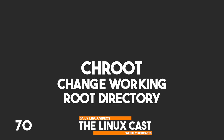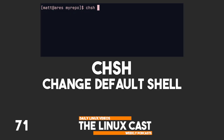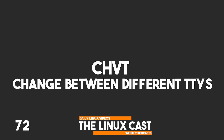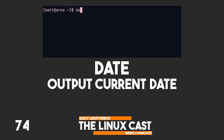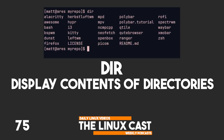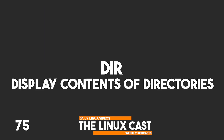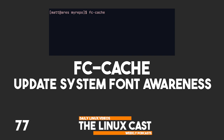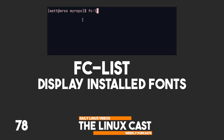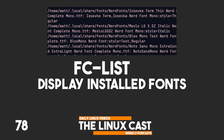chroot is used to change the root directory. chsh is used to change the current shell. chvt is used to change between different TTYs. column displays output in neat columns. date displays the current date. dir displays the contents of a directory, similar to ls. eject is used to eject removable media like USB sticks and hard drives. fc-cache scans font directories. fc-list lists available fonts.